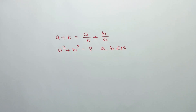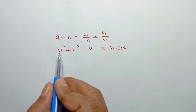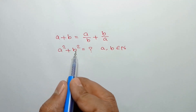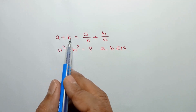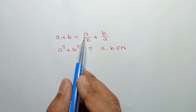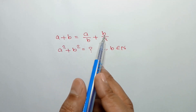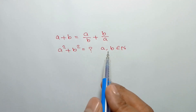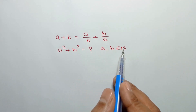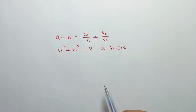Hi everyone. In this video I am going to show how to find the value of a square plus b square, where a plus b is equal to a over b plus b over a, and a and b are natural numbers.